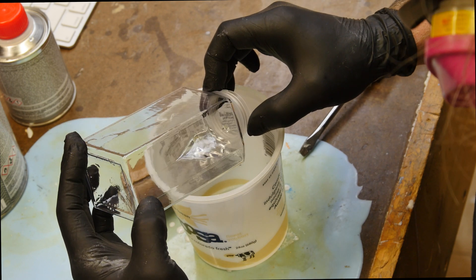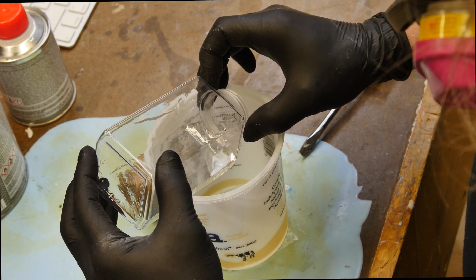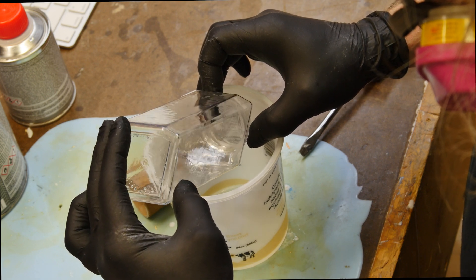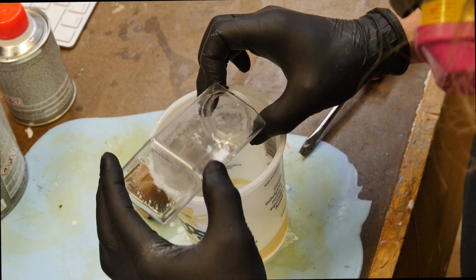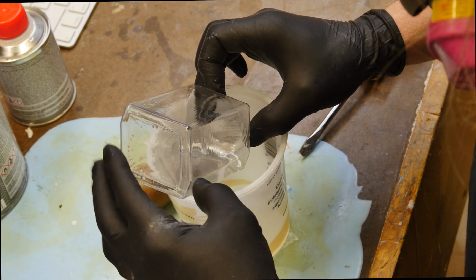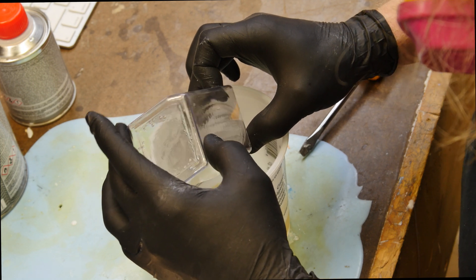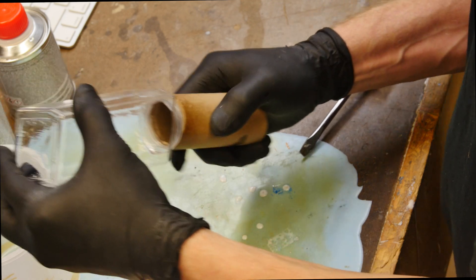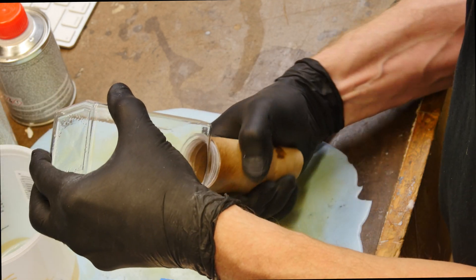And then here I'm rolling the clear coat into the neck area, making sure that I get everything coated really nice so we don't have any issues. So once I'm happy with the inside and it's clear coated really nice, I'm going to dump out the excess clear coat back into the container, and we'll put the cardboard tube on it here.